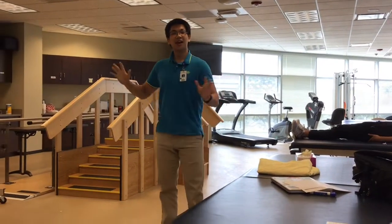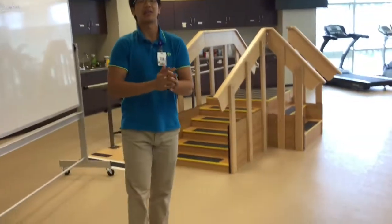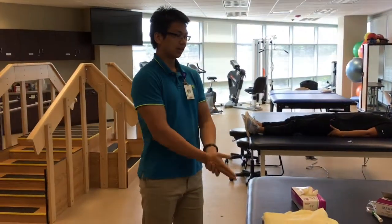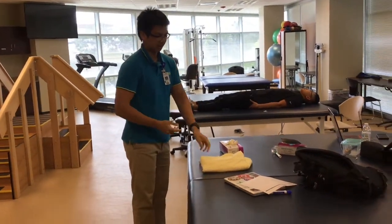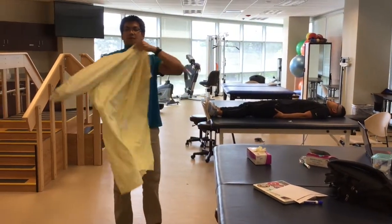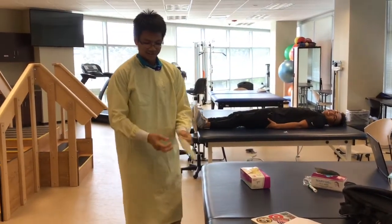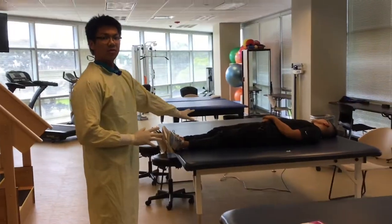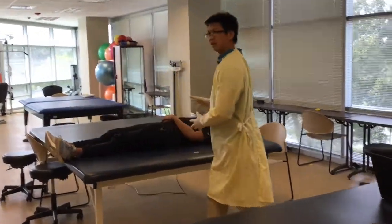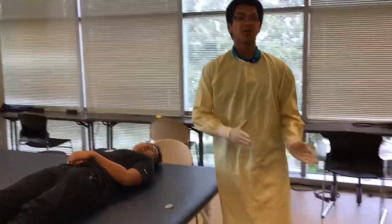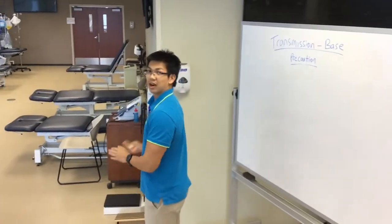For contact precautions, before any kind of precautions, you want to perform hand hygiene — either by applying hand sanitizer or washing your hands. You typically want to use a gown and gloves before or upon entering into the patient's room. I'll be applying the gown and gloves. The patient will be in a private room so that transmission does not spread. I'll enter the patient's room, do my intervention, and before exiting, I'll take off my PPE and perform hand hygiene again before I actually leave the room.